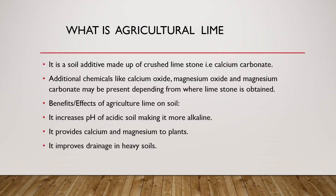Benefits — effects of agricultural lime on soil. It increases the pH of acidic soil making it more alkaline. It provides calcium and magnesium to plants. It improves drainage in heavy soils.